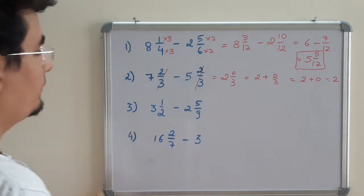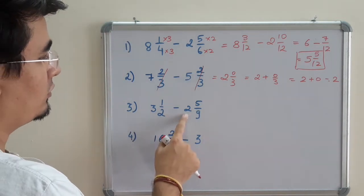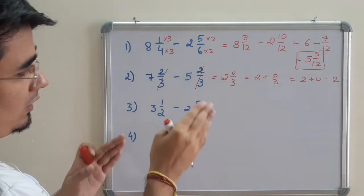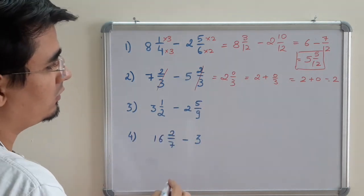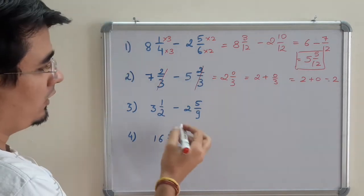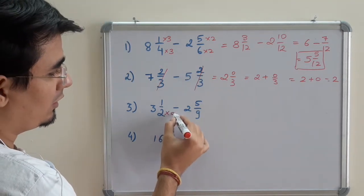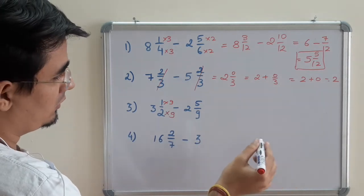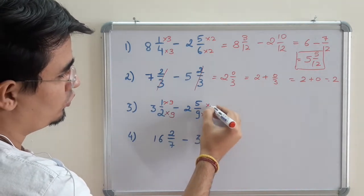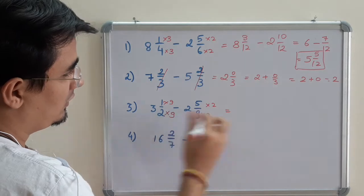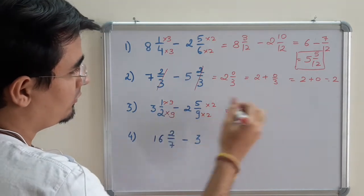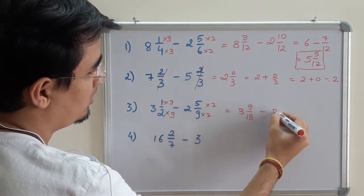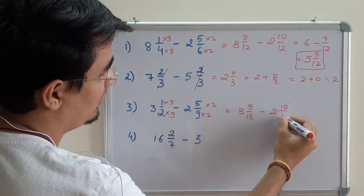Moving on to the next question: 3 minus 2. Before that, the denominator is different, so make the denominator the same. Let me just take 9 and 2 - they are co-prime, so multiplying by 9 on top also, multiplying by 2. Answer is 3 9/18 minus 2 10/18.